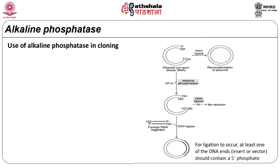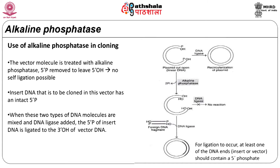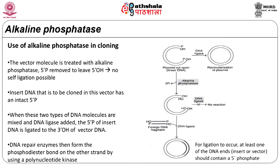Alkaline phosphatase is used in cloning. The vector molecule is treated with alkaline phosphatase where the 5-prime phosphate is removed to leave a 5-prime OH, and no self-ligation is possible. The DNA that is to be cloned is inserted into this vector. When these two types of DNA molecules are mixed and DNA ligase is added, the 5-prime phosphate of the insert DNA is ligated to the 3-prime OH of the vector DNA. The DNA repair enzymes then form the phosphodiester bond on the other strand by using a polynucleotide kinase.